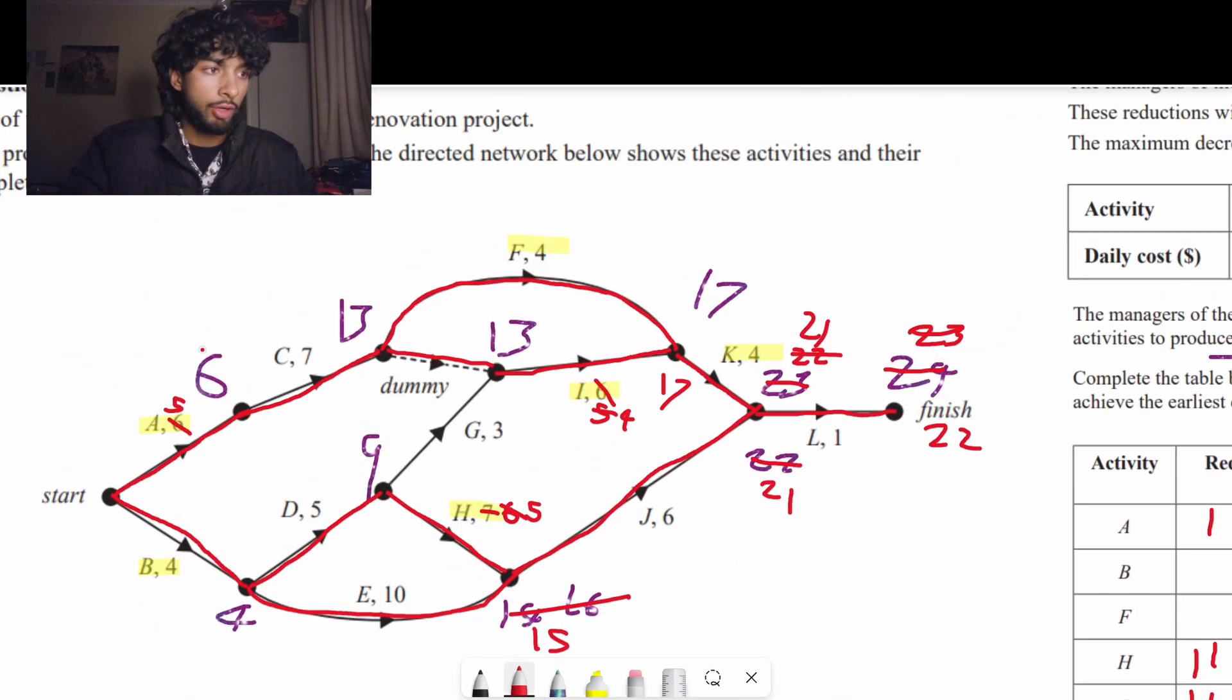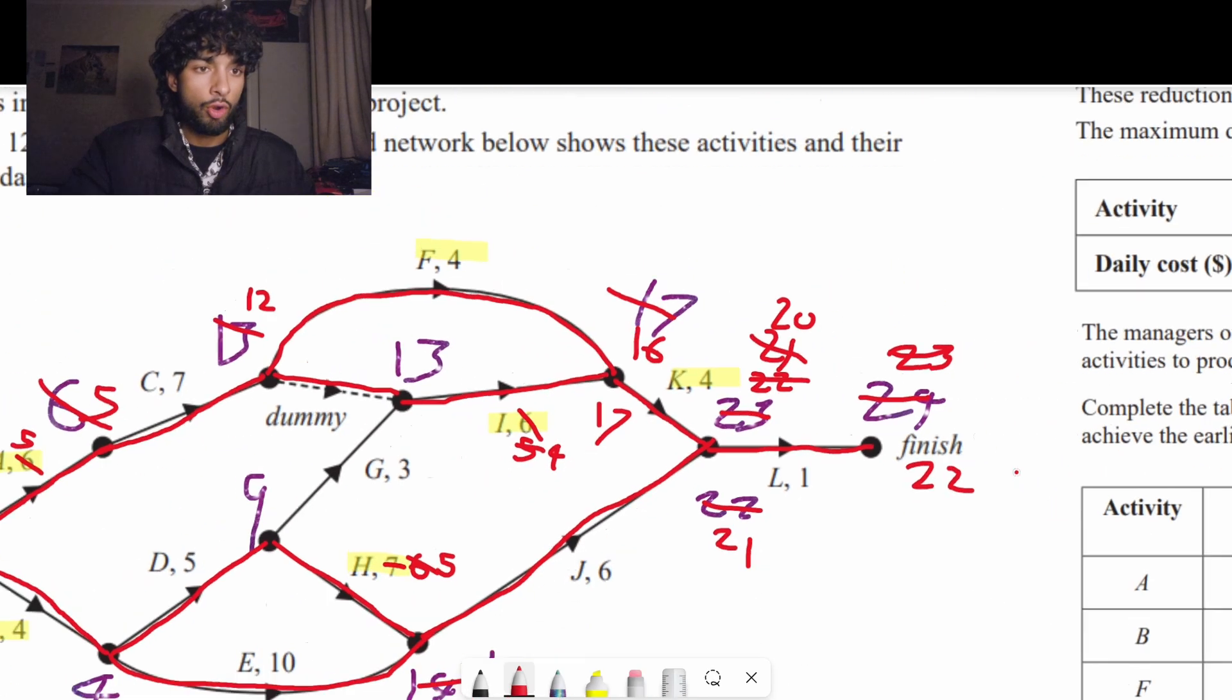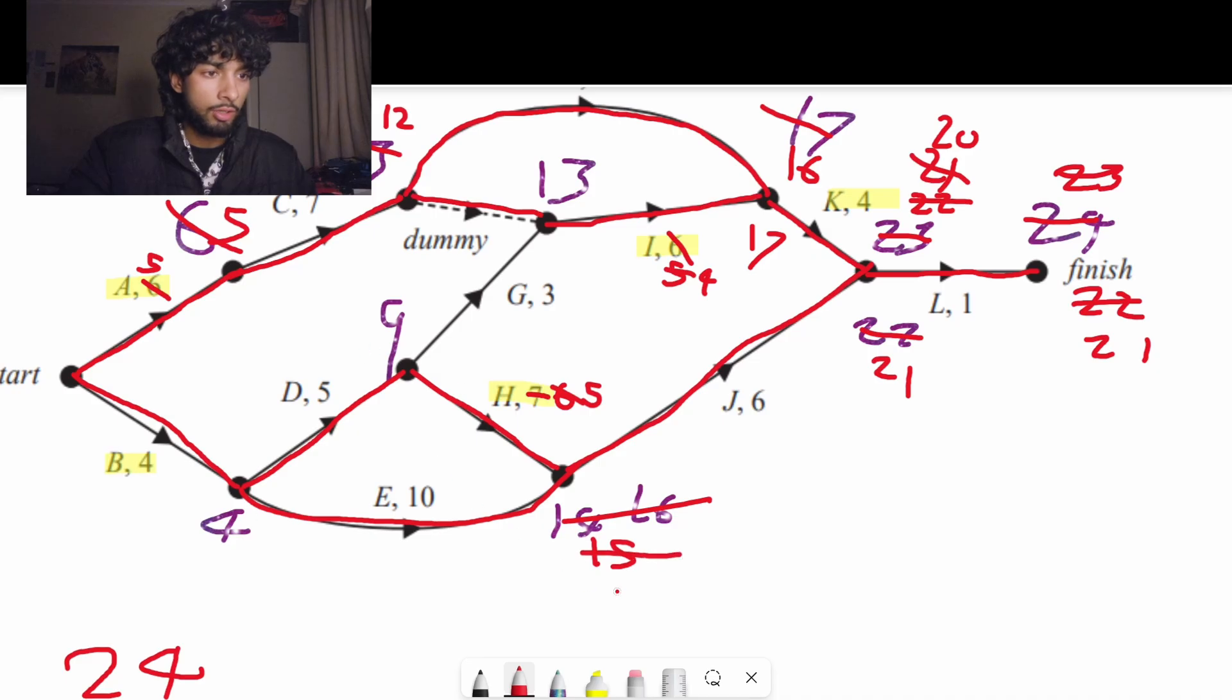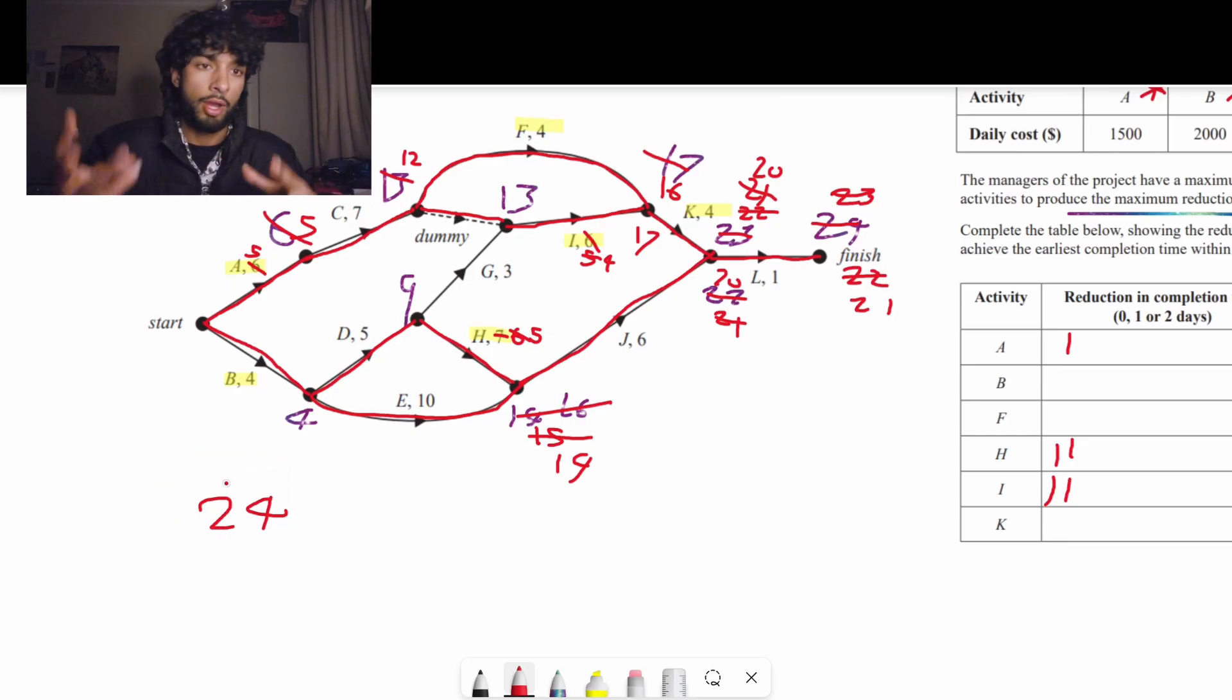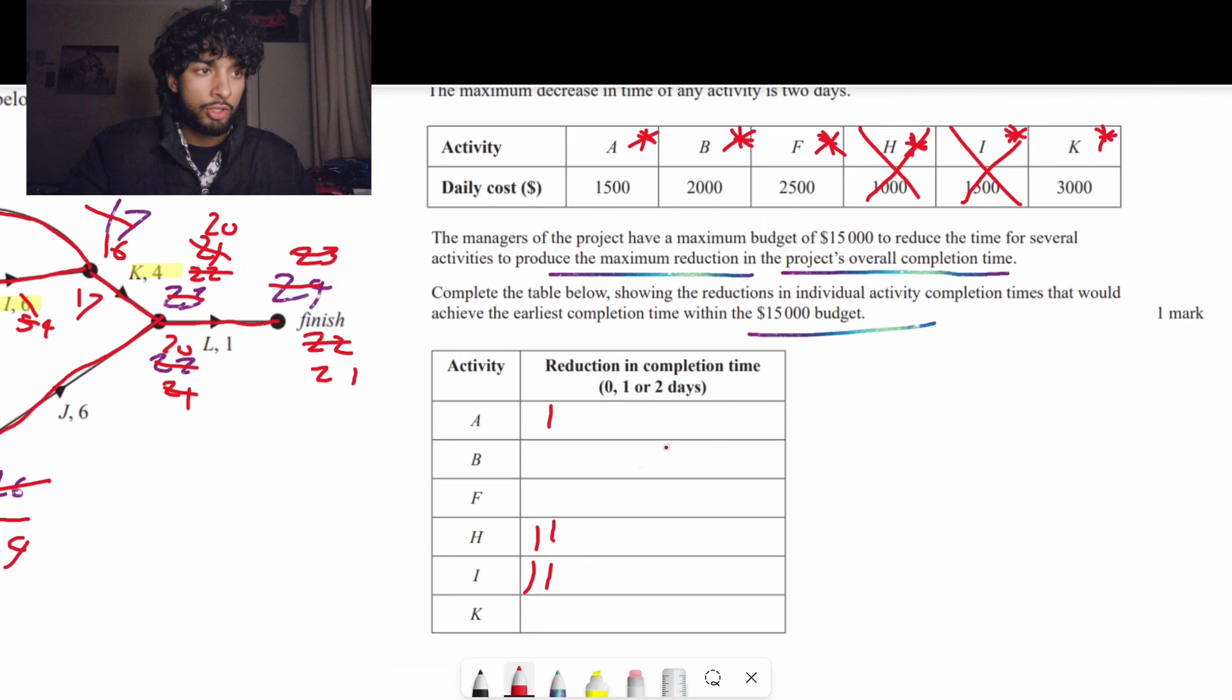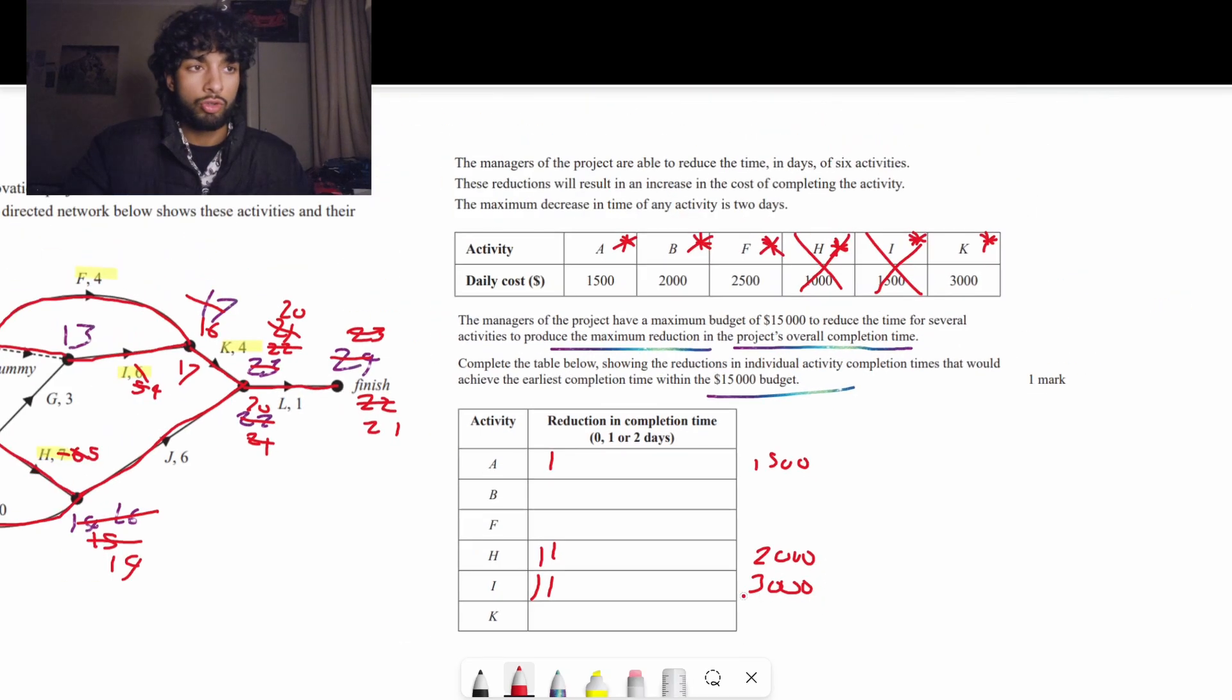Let's recalculate the critical pathways. So if this is 5, that means this is 5 plus 7 is 12. And then 12 plus these 4s are 16. 16 plus 4 is 20. That means the overall completion time is 21. But we'll double check with the bottom pathway as well. 5 plus 5 is 10, so this is 14, and then going up here is 20. So we started at 24 and we've already reduced the overall completion time by three.